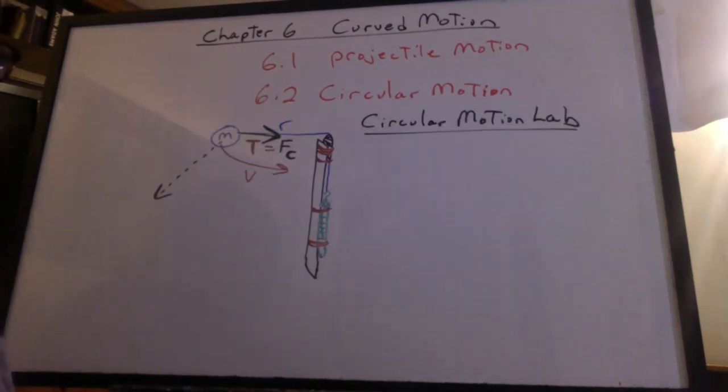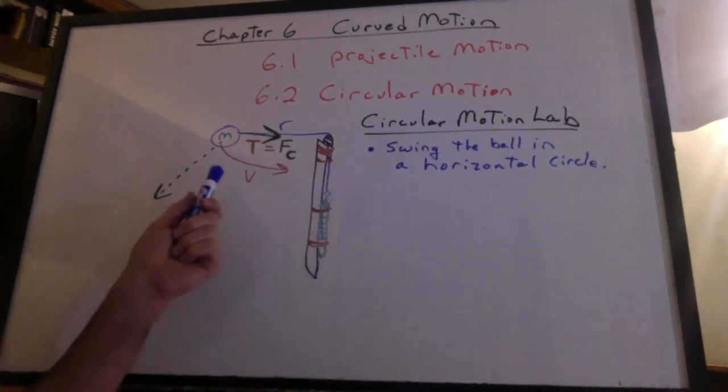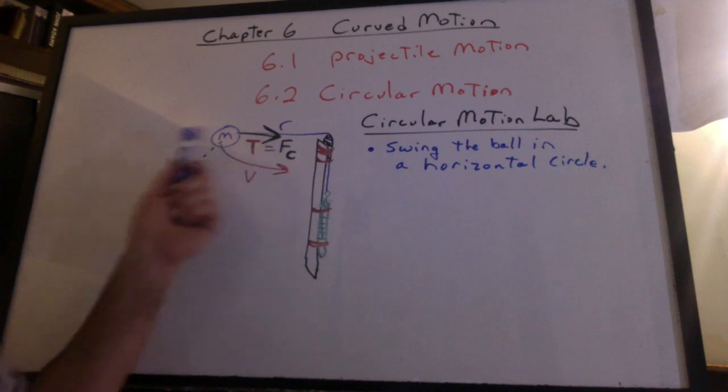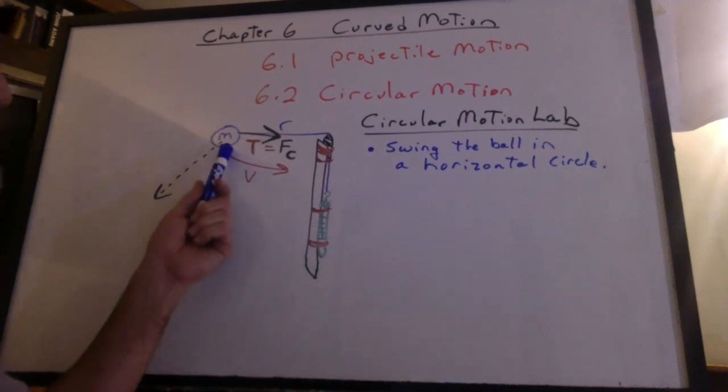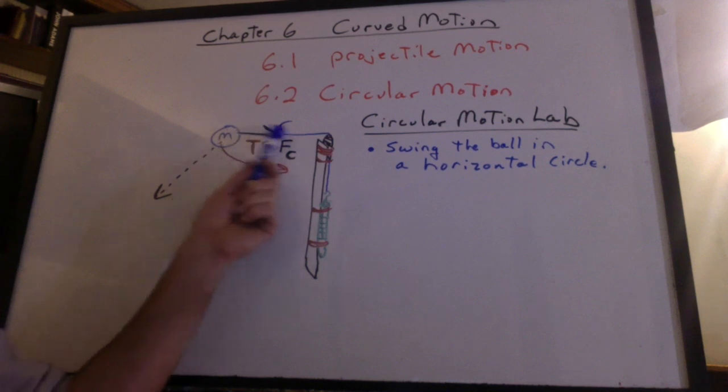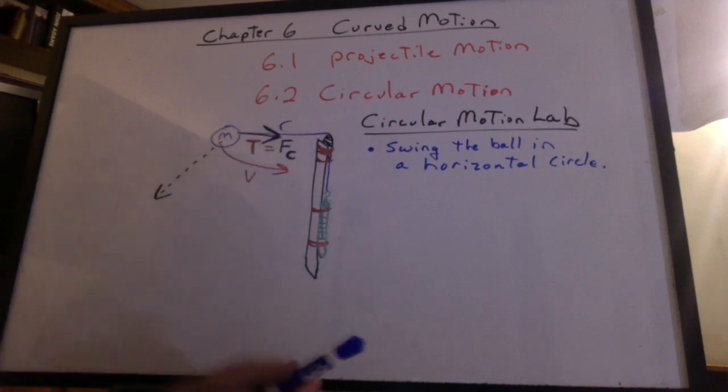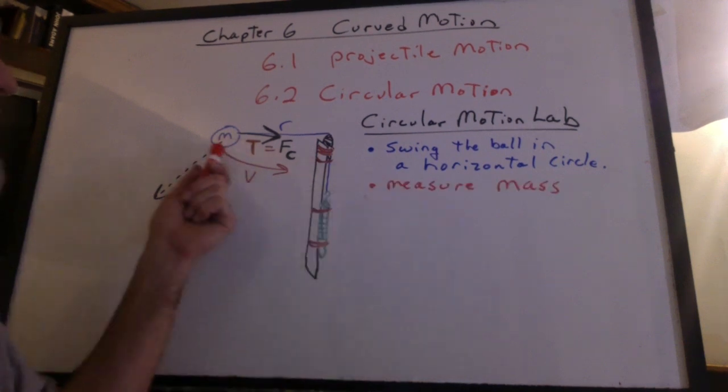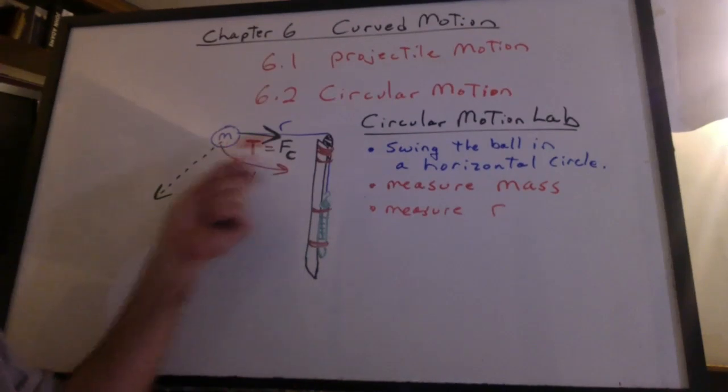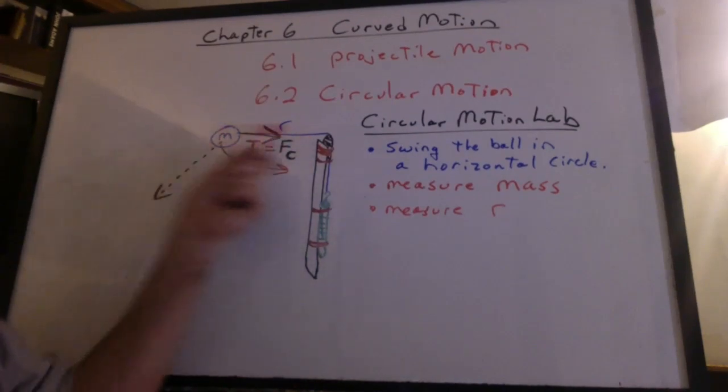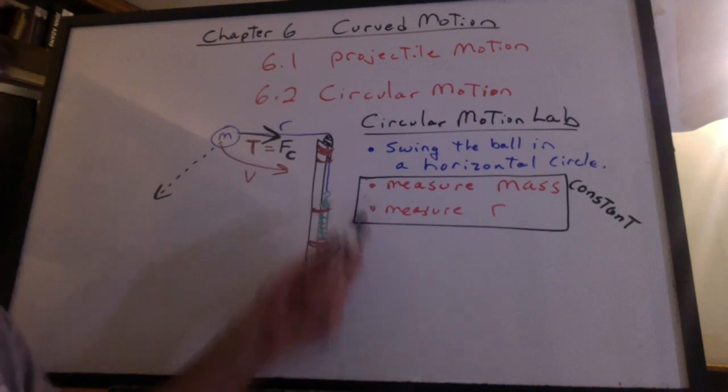So what are we going to do for this circular motion lab? You're going to swing the ball in a horizontal circle. You're going to have to go pretty quick, or else this thing is going to start to snag and wrap around the meter stick. You don't want to do that. In reality, there will be a little bit of a drop here. We're going to pretend that doesn't exist. We're going to pretend that the string is horizontal. It's not a bad approximation. You're going to measure the mass of that ball on your digital scale. Measure the radius of the circle. That's the length of this string. These quantities will be held constant.